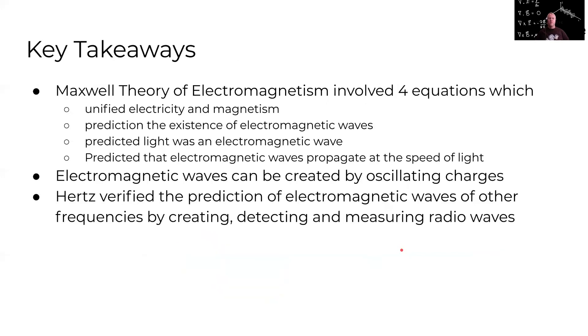So the key takeaways from this video. So Maxwell's theory of electromagnetism involved four equations. You don't need to know them. But it's good to know the backgrounds qualitatively around them. And that these unified electricity and magnetism. They predict the existence of electromagnetic waves. They predicted that light was an electromagnetic wave. And they predicted that electromagnetic waves propagate at the speed of light. Also, that electromagnetic waves can be created by oscillating charges. And that Hertz verified the prediction of electromagnetic waves of other frequencies by creating, detecting, and measuring radio waves.